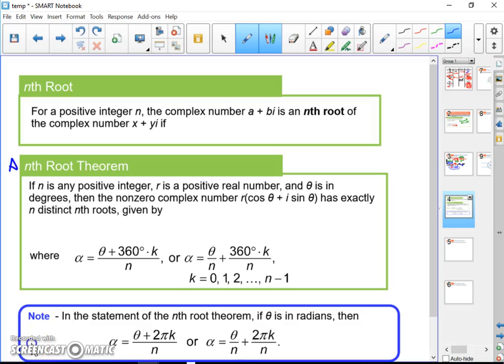I think the nth root theorem is a little bit harder to understand than De Moivre's theorem. But it's super hard to understand on this slide. If you try to read this slide, it's going to be this alpha saying theta plus 360 times k over n. I think that's really, really hard to understand.